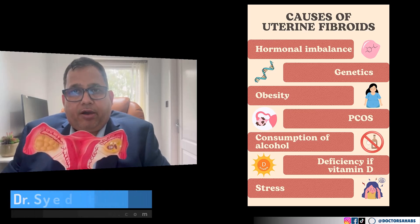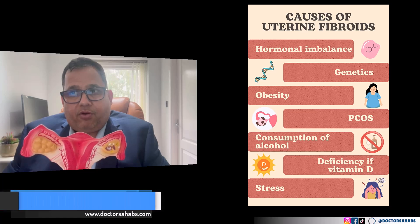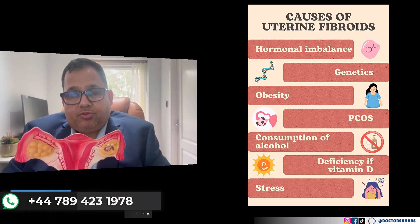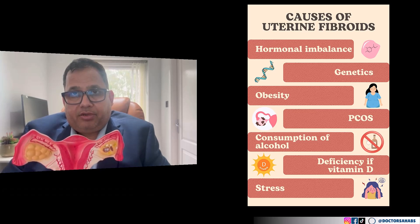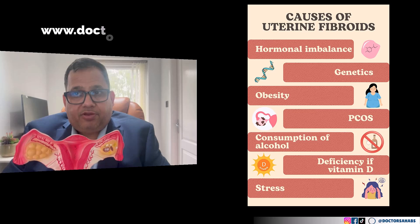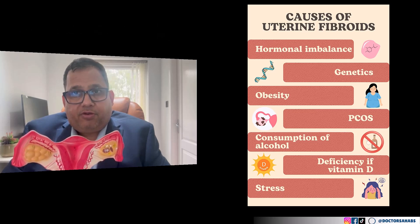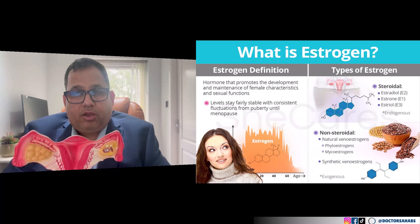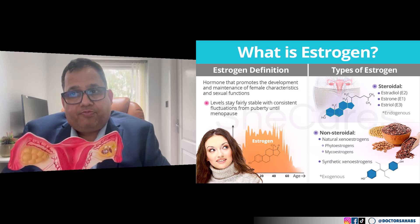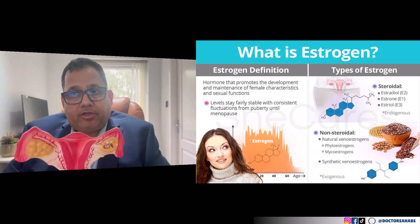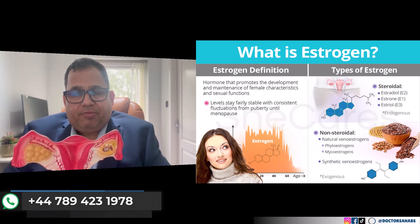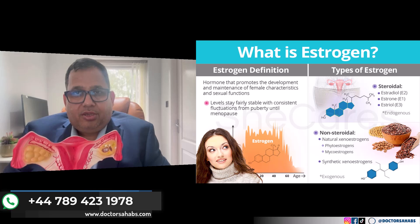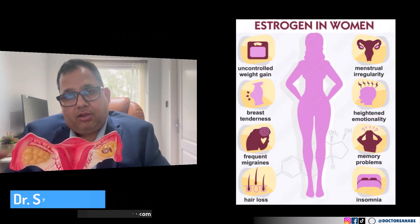The exact cause of fibroids is still unknown, but fibroid development is linked with estrogen production. Estrogen is one of the female reproductive hormones produced by the ovaries. Fibroids usually develop during the reproductive years, around 16 to 50 years of age, when estrogen levels are higher.